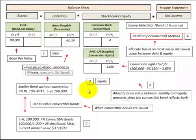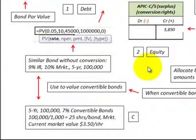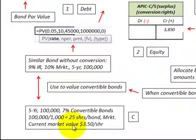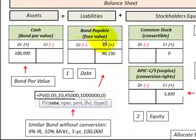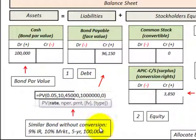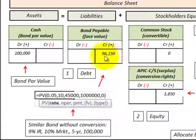Let's go through our example, starting when the bonds are issued. We have a five-year, $100,000, 7% convertible bond, and each bond can be converted into 25 shares of common stock. The current market value of those shares is $3.50 per share. The first thing we do is determine the liability portion of that bond by taking a similar bond without the conversion feature and discounting it back to its present value. For this example, that similar bond discounts back to $96,150.